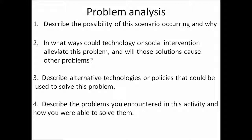Use this problem analysis for the category that you have chosen. Describe the possibility of this scenario occurring and why. In what ways could technology or social intervention alleviate this problem? Will these solutions cause other problems? Describe alternative technologies or policies that could be used to solve this problem, and describe the problems you encountered in this activity and how you were able to solve them.